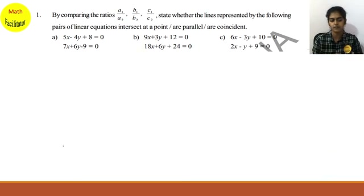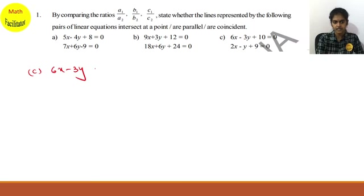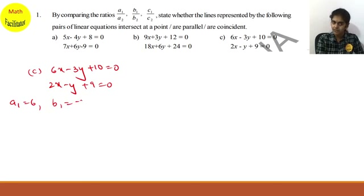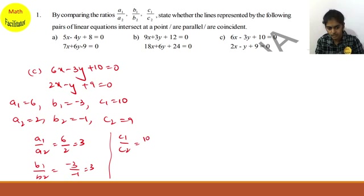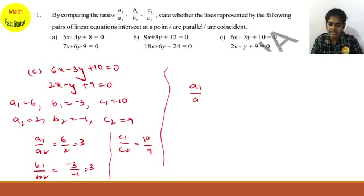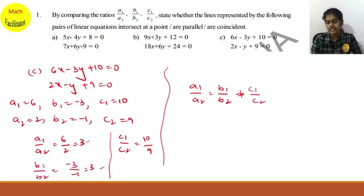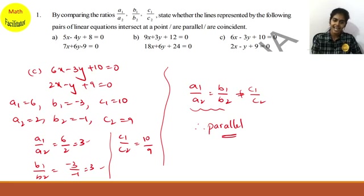Part (c): 6x minus 3y plus 10 equals 0 and 2x minus y plus 9 equals 0. Here a1=6, b1=minus 3, c1=10, a2=2, b2=minus 1, c2=9. So a1/a2 is 6/2 equals 3, b1/b2 is minus 3 by minus 1 equals 3, and c1/c2 is 10/9. Since a1/a2 equals b1/b2 but c1/c2 is not equal, therefore the lines are parallel lines.